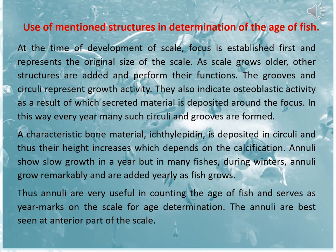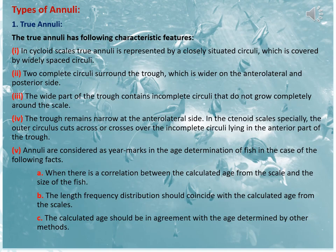Annuli are best seen at the anterior part of the scale. This annulus is actually the structure which gives us the idea of the age of the fish, and annuli could be of different types — true annuli as well as false annuli. True annuli have the following characteristic features. In cycloid scales, true annuli are represented by closely situated circuli which are covered by widely spaced circuli. Two complete circuli surround the trough, which is wider on the anterior, lateral, and posterior sides. The wide part of the trough contains incomplete circuli that do not grow completely around the scale.